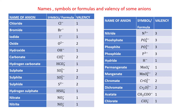These are the names, symbols or formulas, and valency of some anions — anions means negatively charged ions. Chloride: Cl-, valency is 1. Bromide: Br-, valency is 1. Iodide: I-, valency is 1. Oxide: O2-, remember this is one oxygen atom bearing two negative charges, valency is 2.